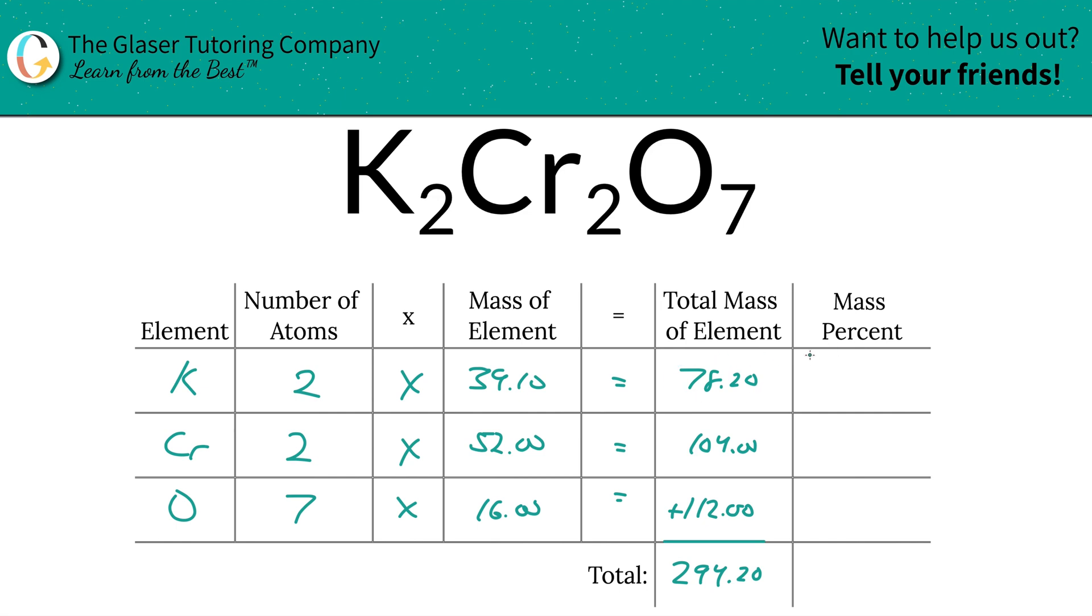To find the mass percent of potassium, we take the total mass of potassium, 78.20, and divide it by the total mass of the entire compound, 294.20, and multiply by 100. This simple percent calculation—part over whole times 100—works out to be roughly 26.58%.